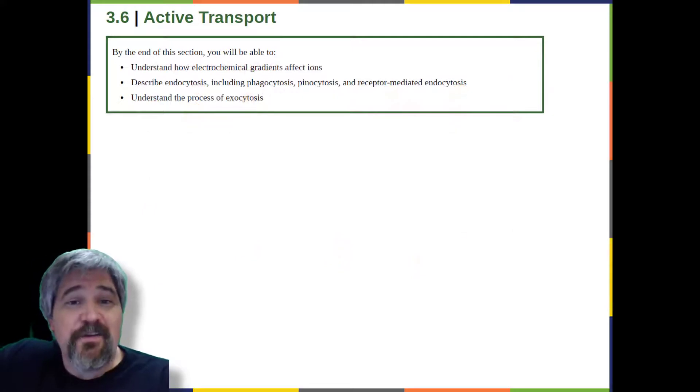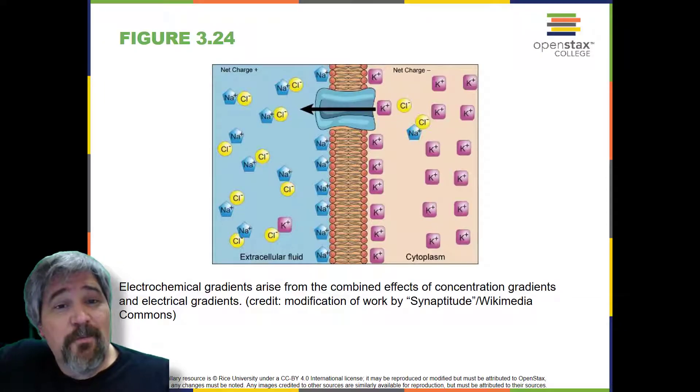In addition to moving small ions and molecules through the membrane, cells also need to remove and take in larger molecules and particles. Some cells are even capable of engulfing entire unicellular microorganisms. You might have correctly hypothesized that the uptake and release of large particles by the cell requires energy. A large particle, however, cannot pass through the membrane even with energy supplied by the cell.